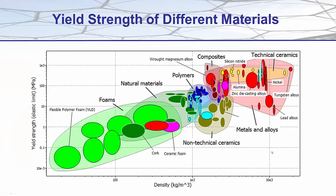A plot of yield strength versus density shows typical values for metals and metal alloys with elastic limits around 50 to 100 MPa. Polymers have elastic limits well below 100 MPa, and foams and natural materials are lower still.